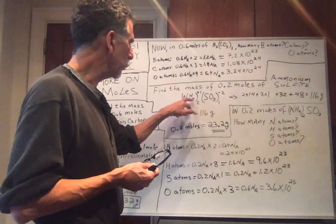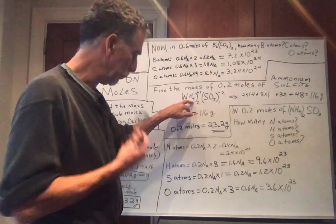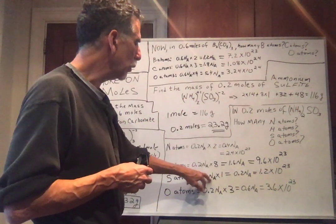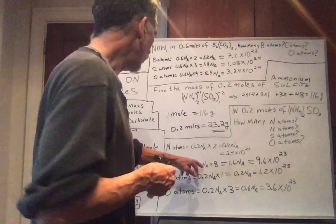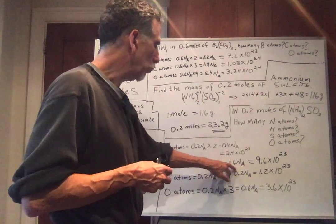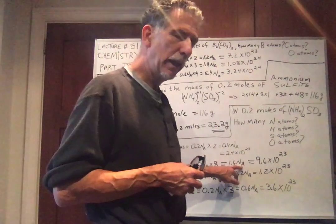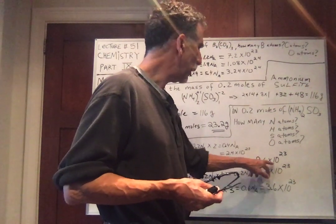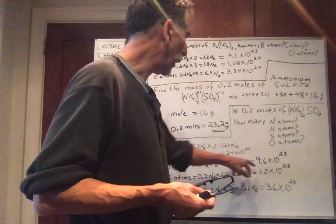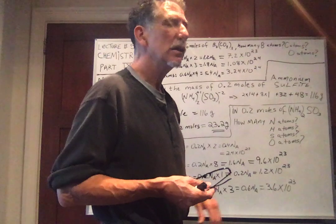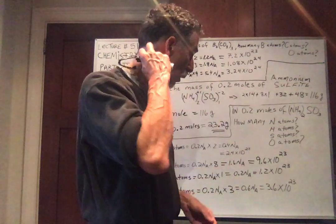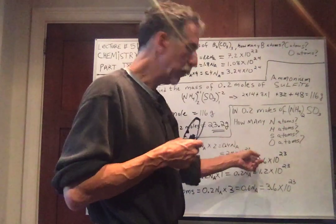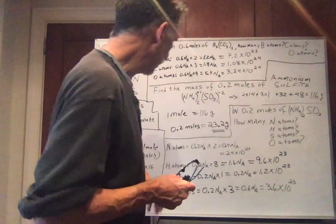How many H atoms? Well, we have 8 H atoms in each molecule. So if we have 0.2 NA, we multiply by 8, we get 1.6 NA. Again, NA is 6 times 10 to the 23rd, Avogadro's number. And so the total number of H atoms is 9.6 times 10 to the 23rd. Or on an exam, it could just be 1.6 NA. I want you to be aware. I can put it in any form.